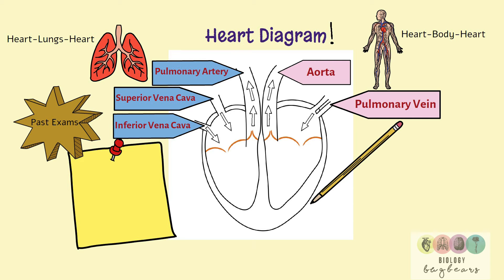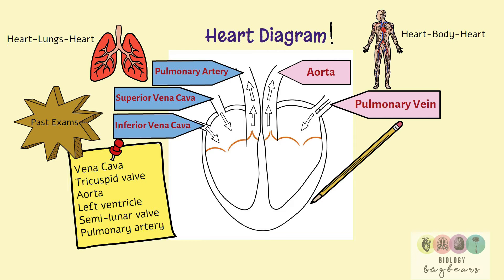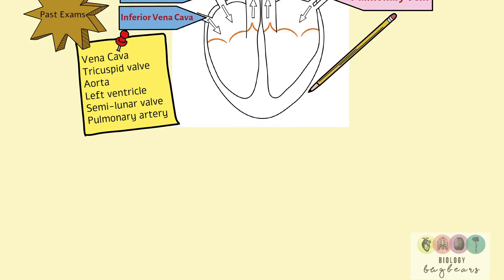Don't worry too much about drawing your diagram — just make sure you have all your key labels. In past exams, the key labels required were: vena cava, tricuspid valve, aorta, left ventricle, semilunar valve, and pulmonary artery. A very basic diagram with simple labels is sufficient.